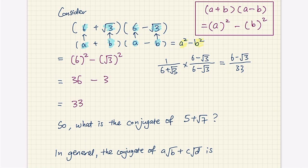We're now going to give a name to this special thing that we multiply. If I have 6 plus root 3 in the denominator, I multiply it with the very special 6 minus root 3, which we call the conjugate. The conjugate comes about because if I have A plus B, in order to get A squared minus B squared I multiply it with A minus B. Both terms are the same but the signs are opposite. So if I have A plus B, I multiply it with A minus B; likewise, A minus B can be multiplied with A plus B to get A squared minus B squared.